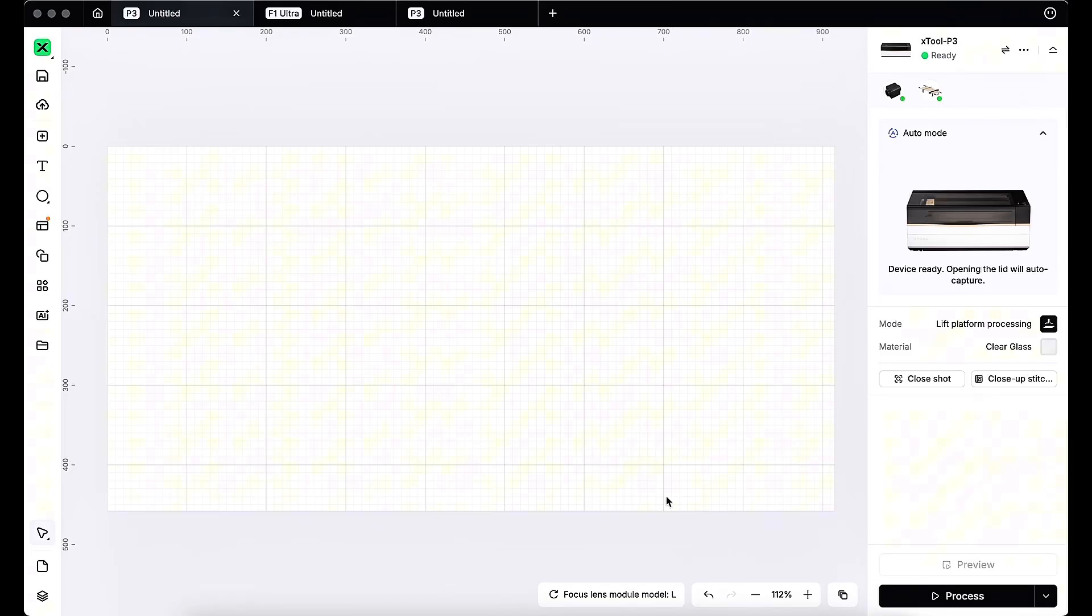Now since we have our P3 up and running again and we are in X-Tool Studio software, we can see that at the bottom it tells us that the machine has identified the new L lens has been installed. If that did not happen in your case, you can always hit this refresh button and the machine should automatically determine what type of lens is currently installed.